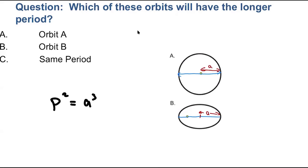Therefore, it must be the case that eccentricity does not show up at all in this equation. The only thing that matters is the semi-major axis of this orbit — it does not matter how elongated this orbit is. If the semi-major axis of two objects orbiting the sun is the same, their orbital period will also be the same. So the answer is C: they will have the same orbital period because they have the same semi-major axis. Eccentricity does not play a role.